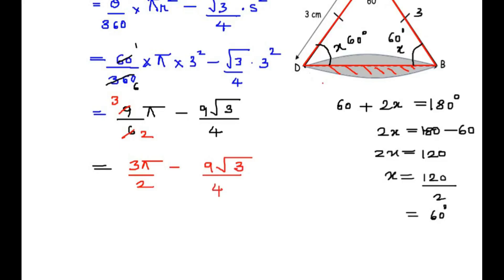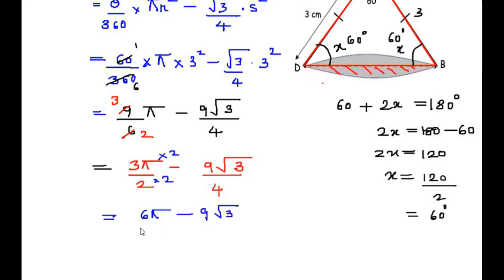Taking a common denominator of 4: multiplying 3pi/2 by 2/2 gives 6pi/4. So the area of segment BD = (6pi minus 9 root 3) over 4. This is the area of just one segment — the shaded part on one side of the line of symmetry BD.